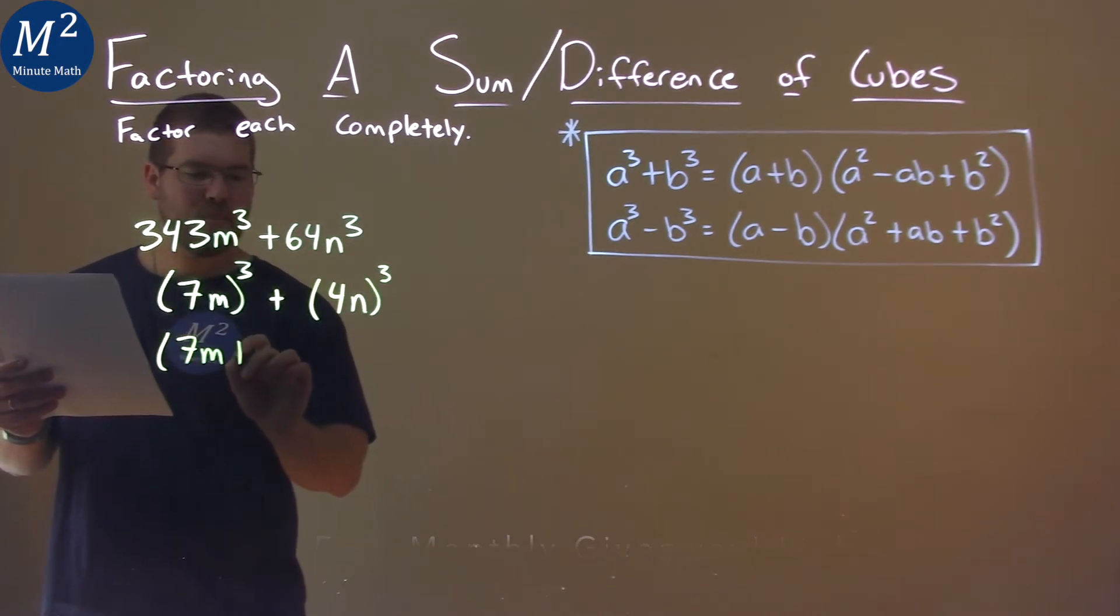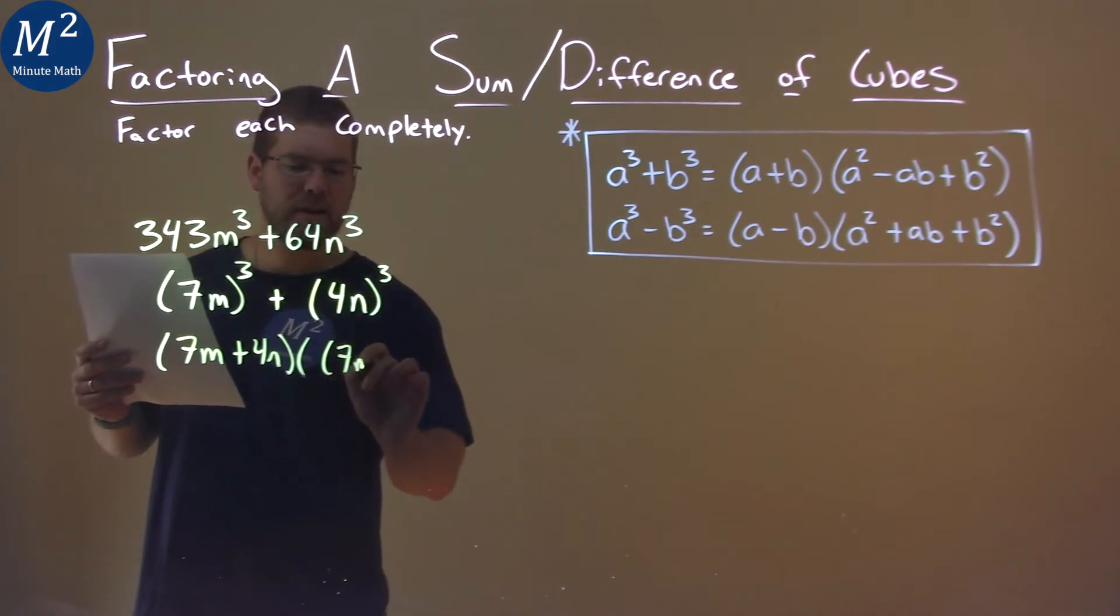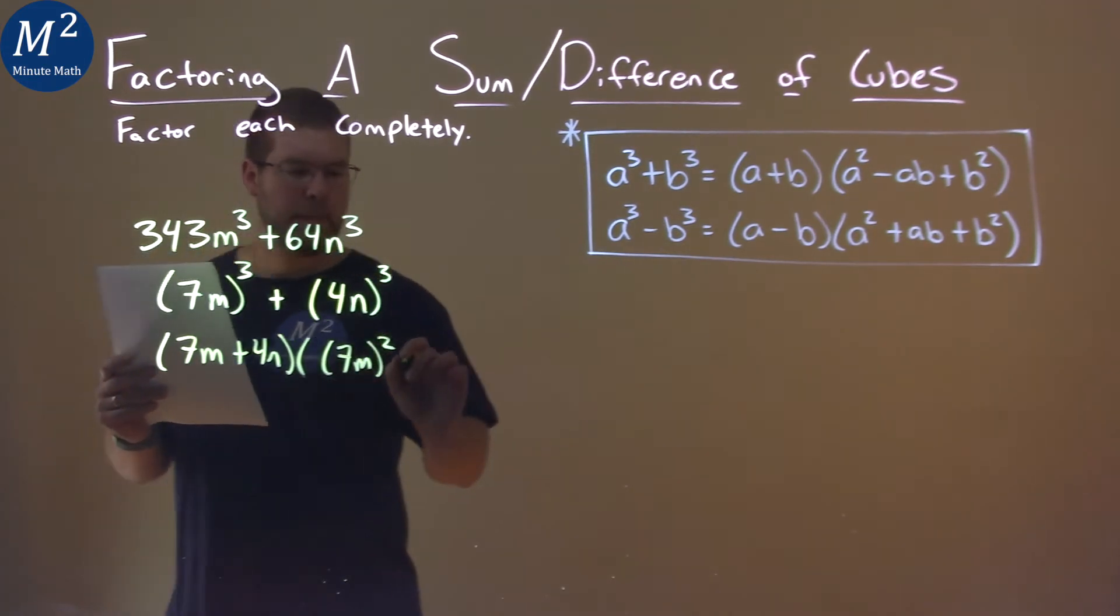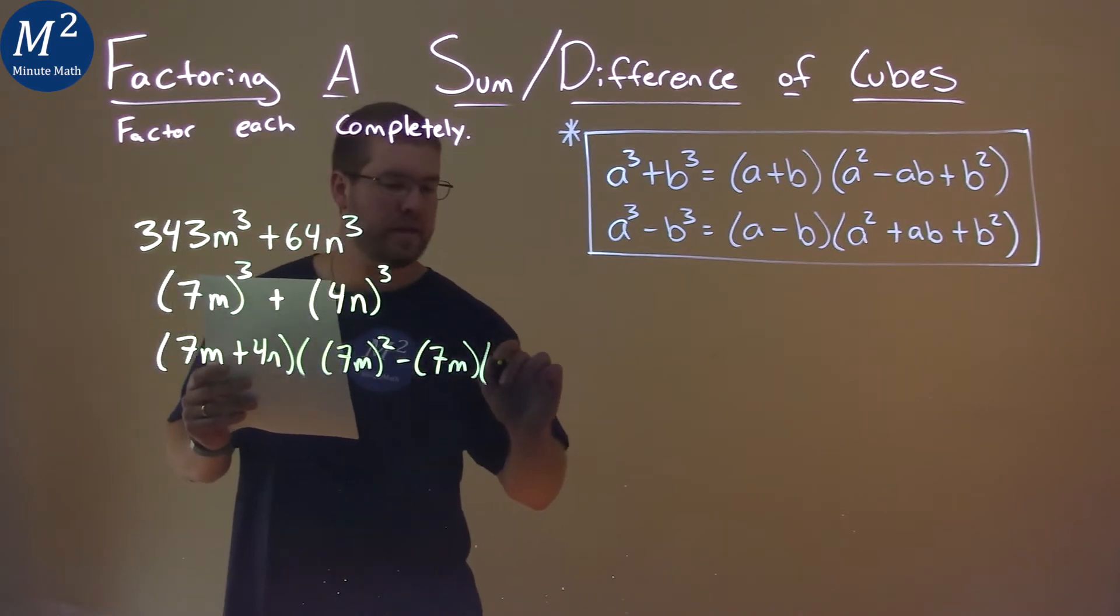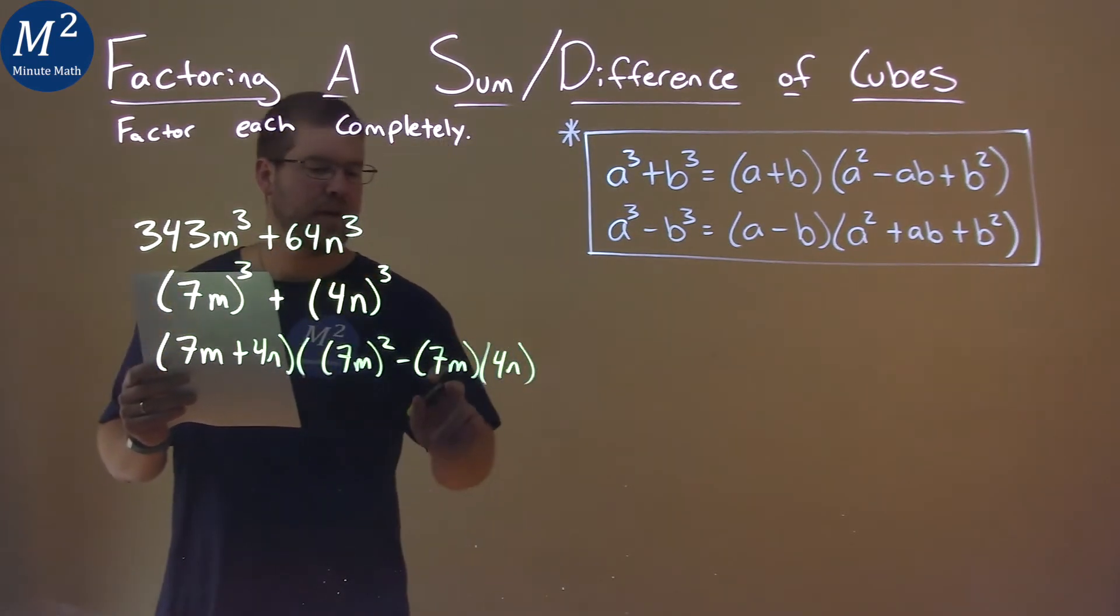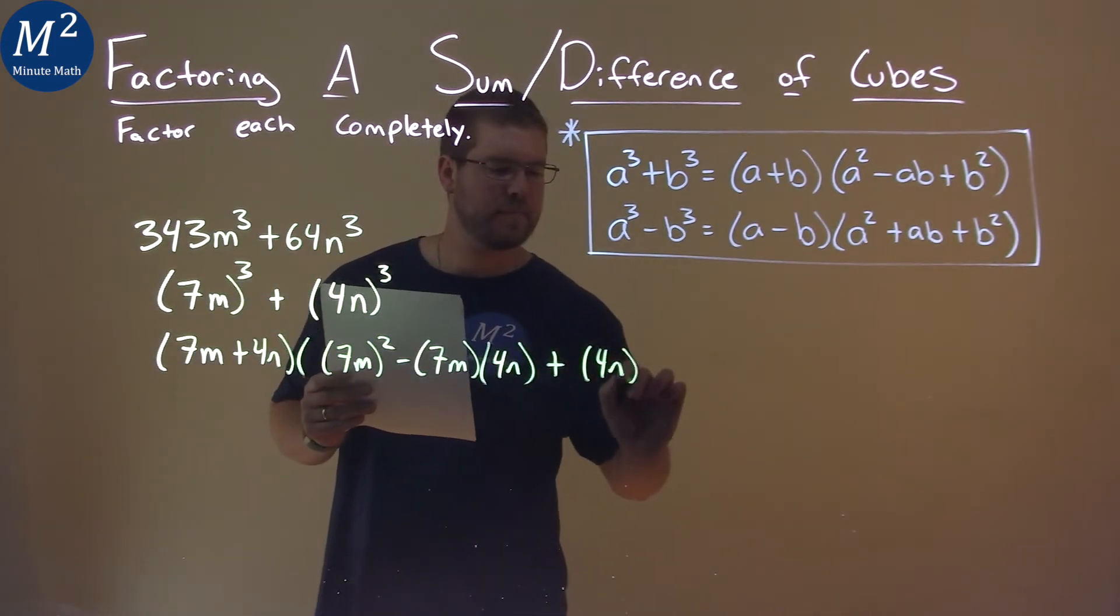7m plus 4n here in the first parenthesis, second parenthesis, 7m all squared minus 7m times 4n times 4n, right? A times the b plus our b value, 4n all squared.